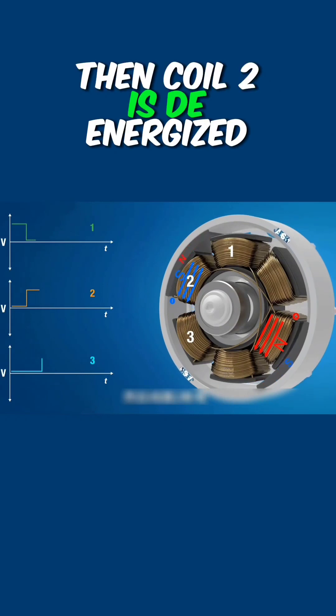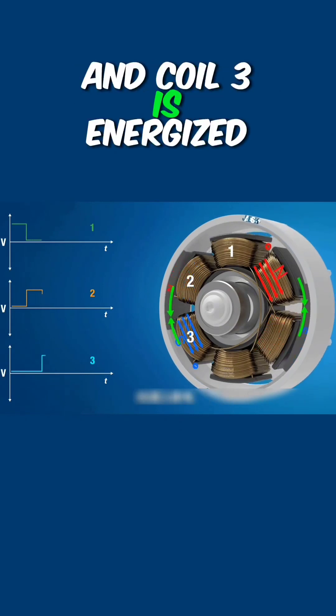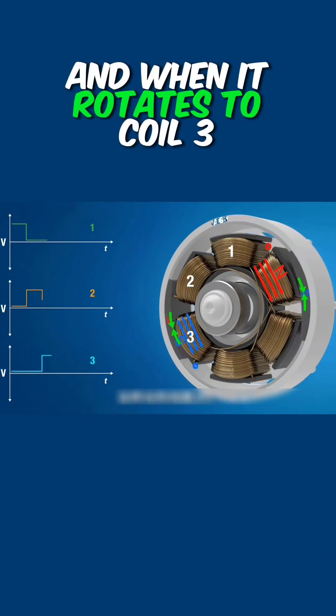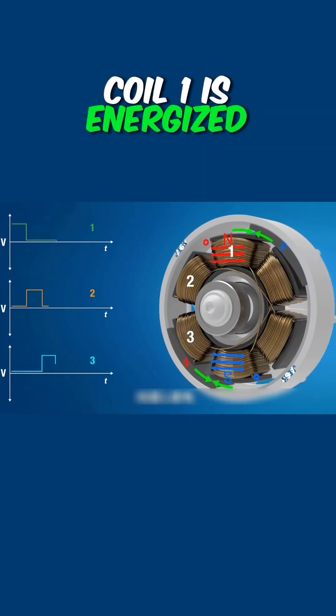Then coil 2 is de-energized and coil 3 is energized. When it rotates to coil 3, coil 1 is energized again.